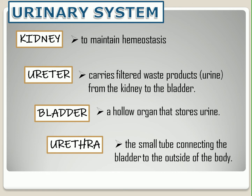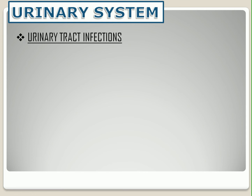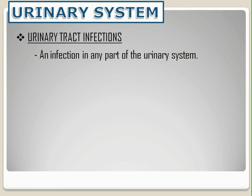Let's now proceed to some diseases. Urinary tract infection is an infection in any part of the urinary system. The most common cause is bacteria from the large intestine, which is Escherichia coli. Women are more likely to get a UTI because the urethra is closer to the anus and it is shorter compared to men, making it easier for bacteria to enter the urinary tract.